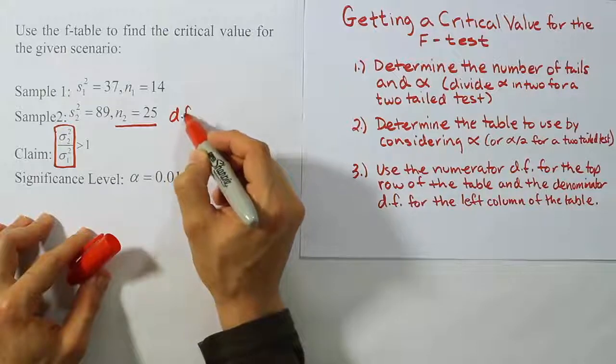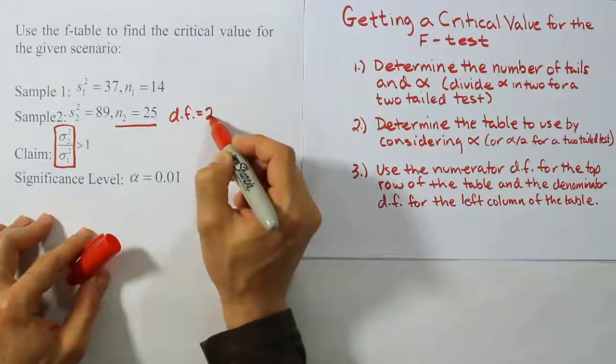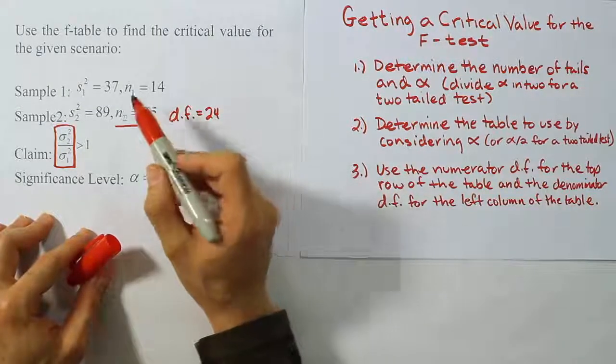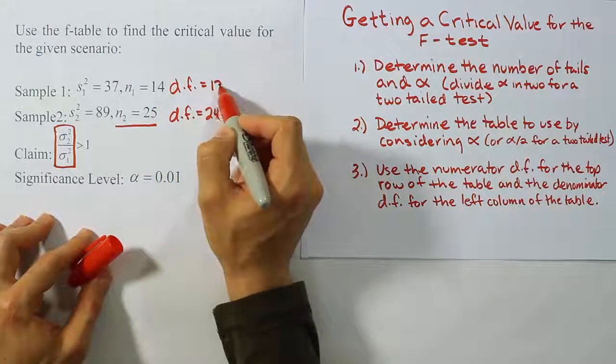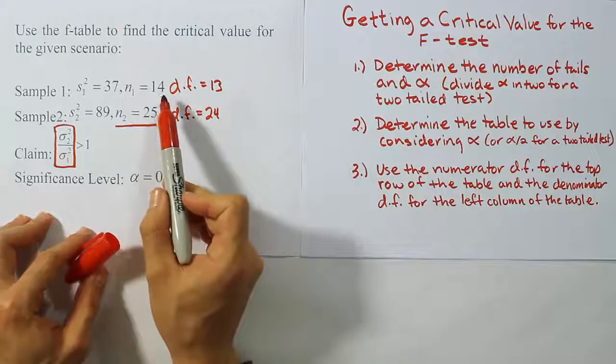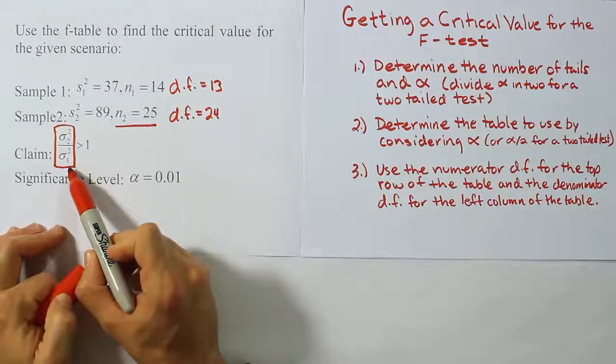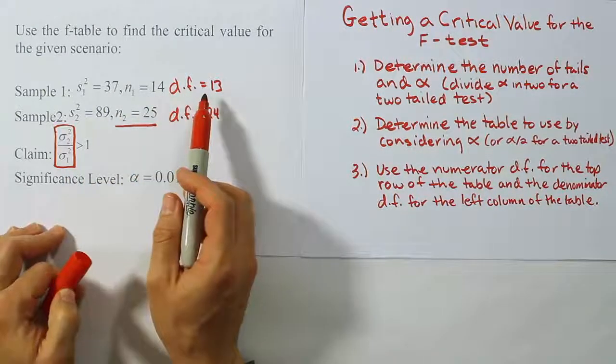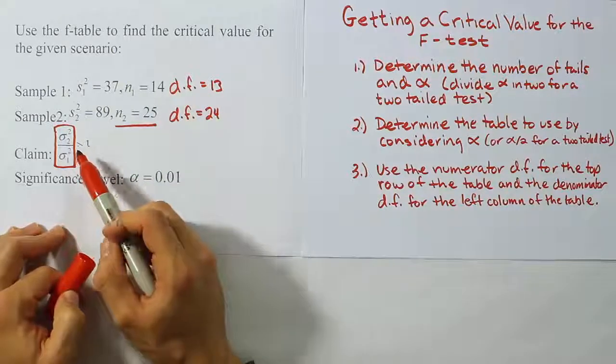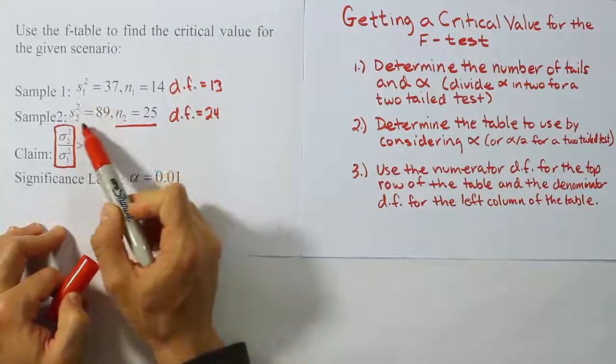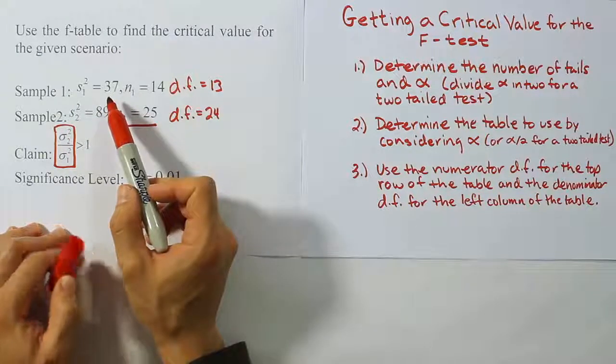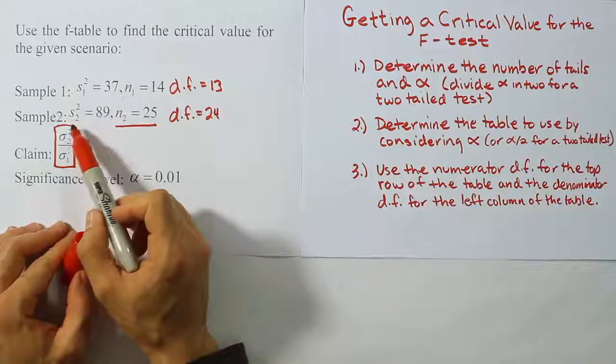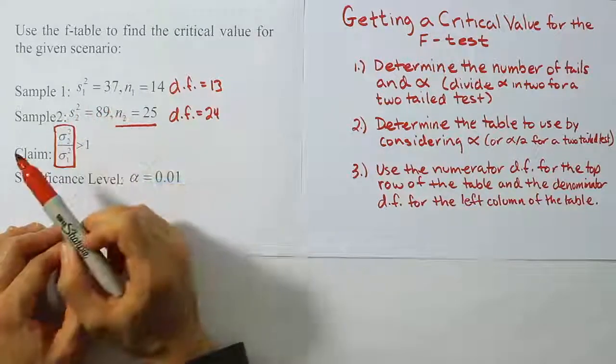So we'll say the degree of freedom for this population is 24 or for this sample, right? The degrees of freedom for this one is going to be 13. And that will be our denominator degrees of freedom because the first population, right, it's going to be the denominator degrees of freedom. You will see them do this whenever they have a larger sample variance for the second population. Otherwise, of course, the first population is usually the numerator, but not if the second population has a larger sample variance.